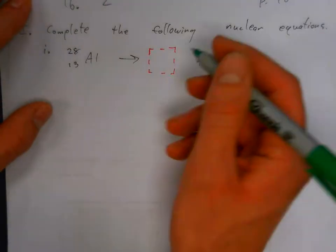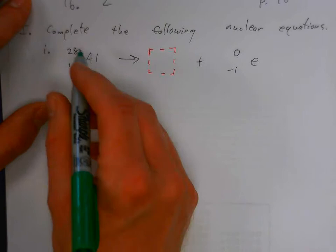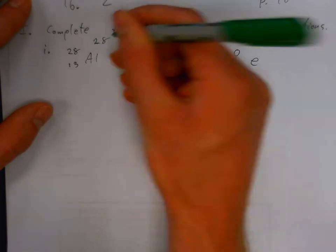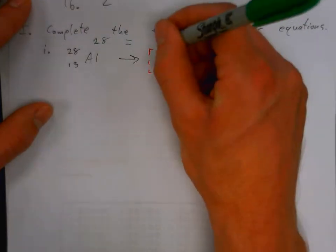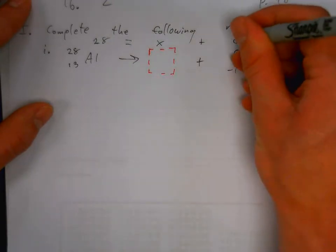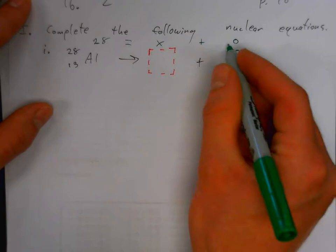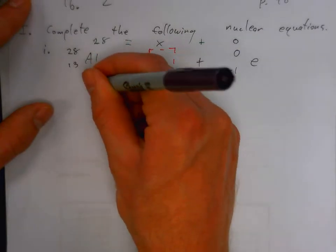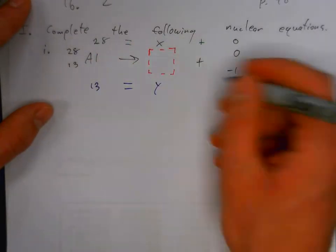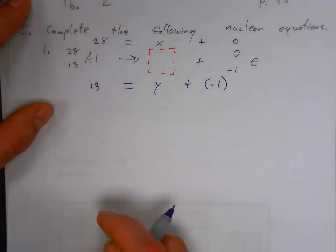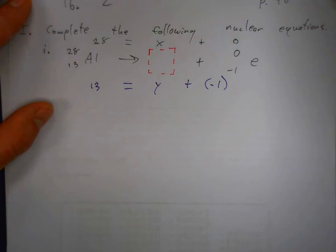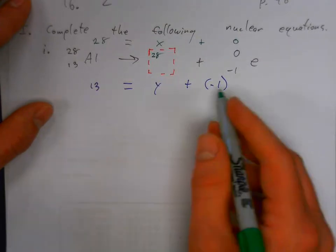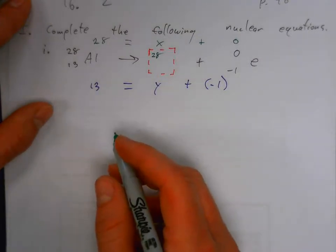I'm going to make two equations, one for the mass numbers, one for the atomic numbers. So 28 equals x plus zero, and 13 equals y plus negative one. Solving for x and y: x equals 28 and y equals 14.